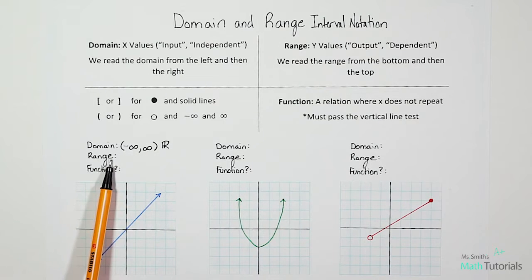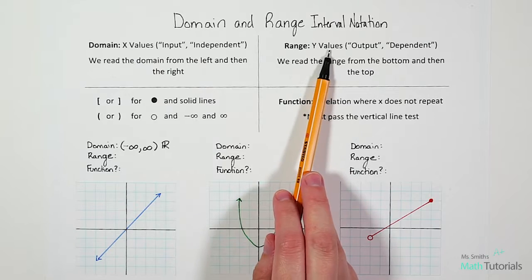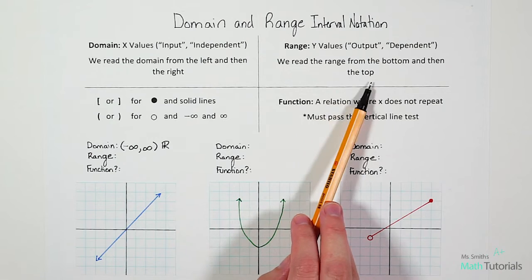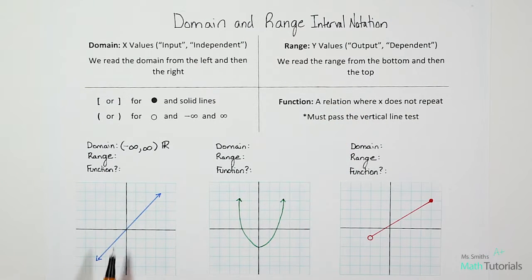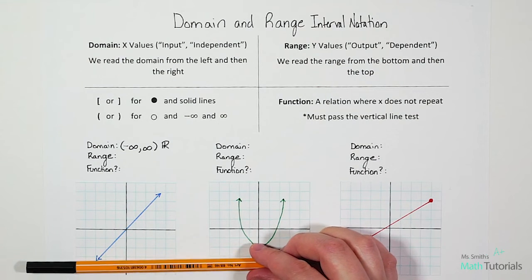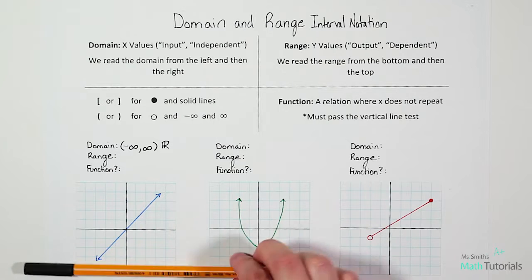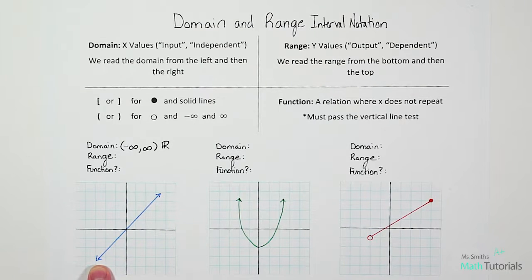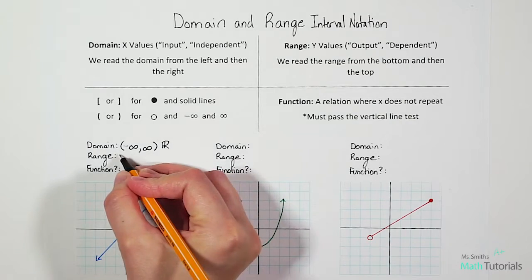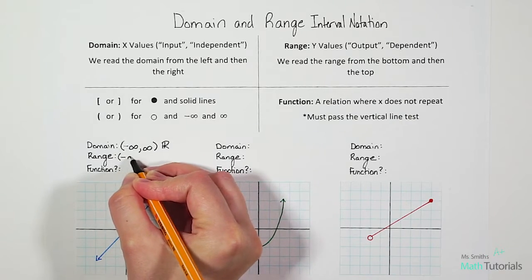Now let's look at the range. Remember, range is our y values, and we read the range from bottom to top. So now we're looking at our y-axis — we don't care about x anymore, just y. We always read from the bottom and pull up. What's the first place we hit? We hit an arrow — arrow means infinity. Because we're going down on the left side, we call it negative infinity.